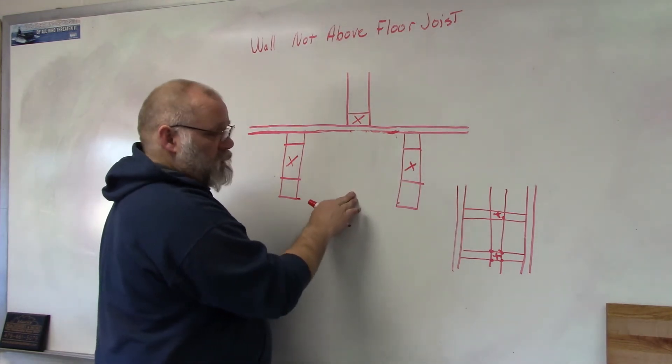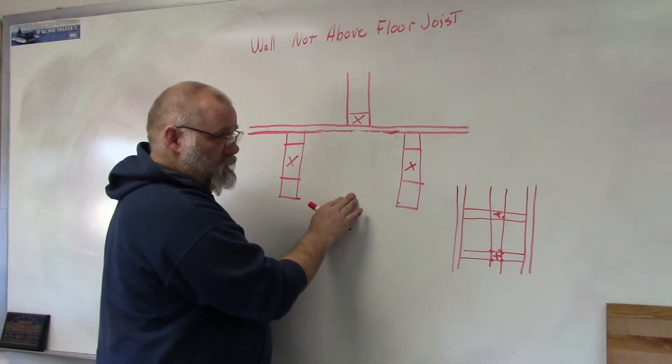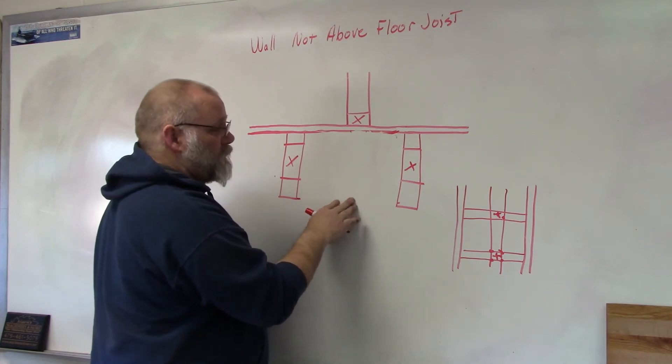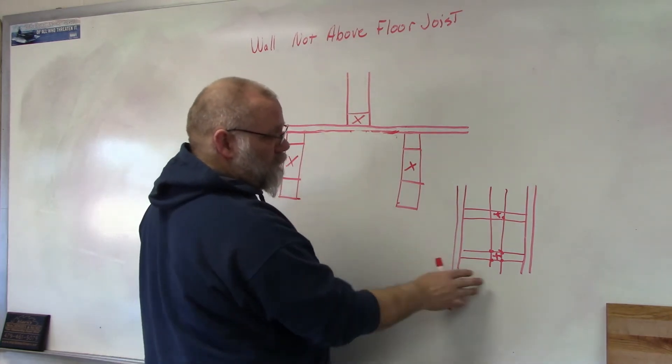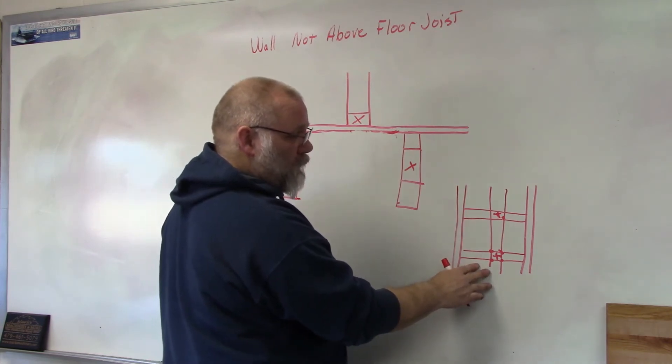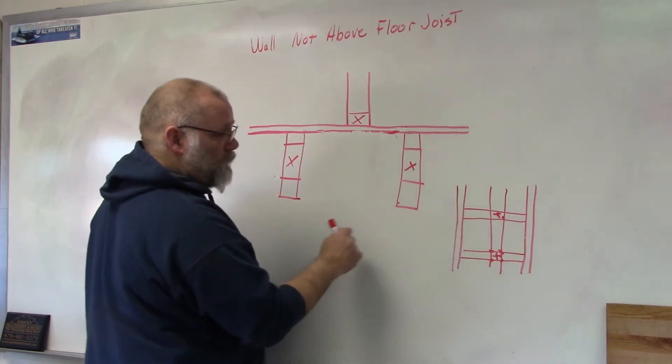So putting in the joist is best when you're building the floor system because that would be tough to put it back and put it in there later on. But if you forgot you can go in and put it in with the blocking and it will serve the same purpose.